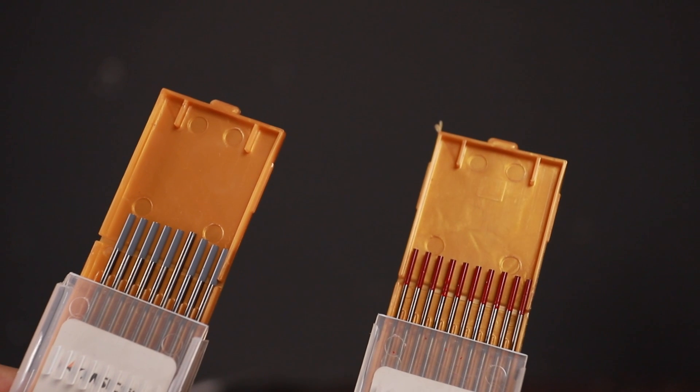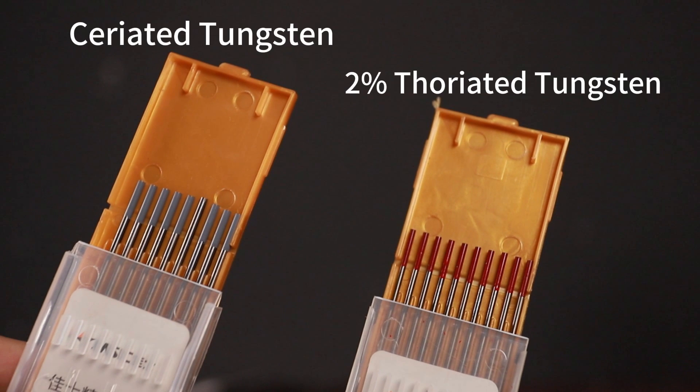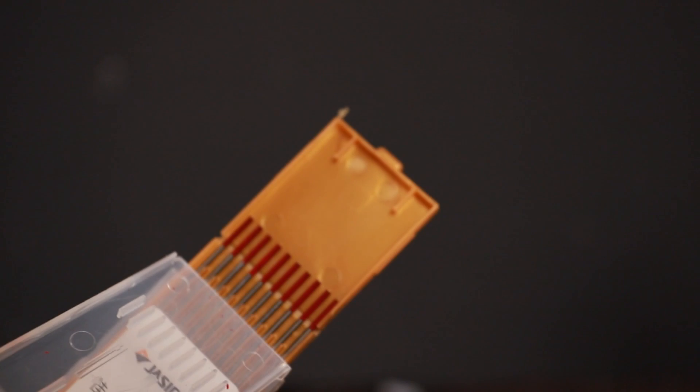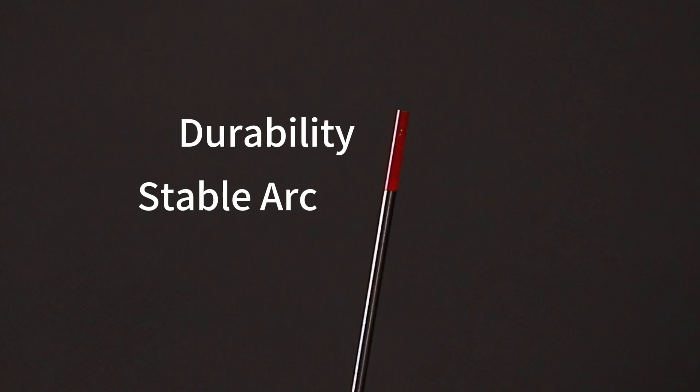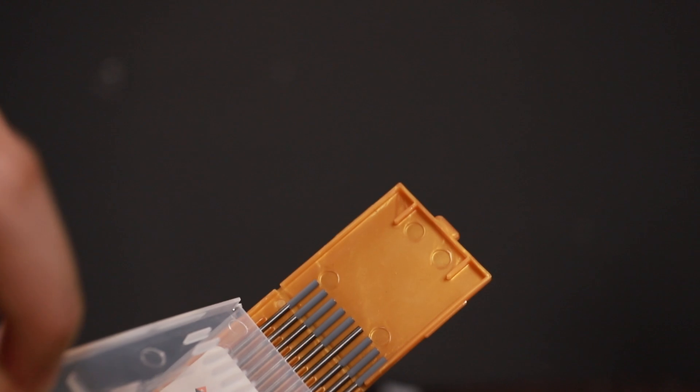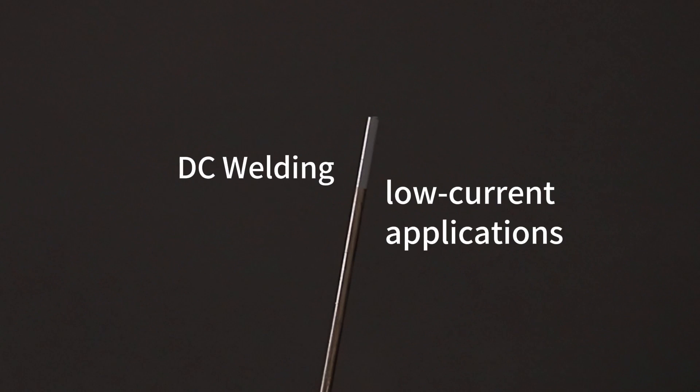Choosing the right tungsten electrode is crucial. For stainless steel welding, we have two popular options: 2% thoriated tungsten and seriated tungsten. Thoriated tungsten is commonly used for its durability and stable arc, but has radioactive safety concerns. On the other hand, seriated tungsten is safer and reliable for most stainless steel projects, particularly suited for DC welding and low current applications.